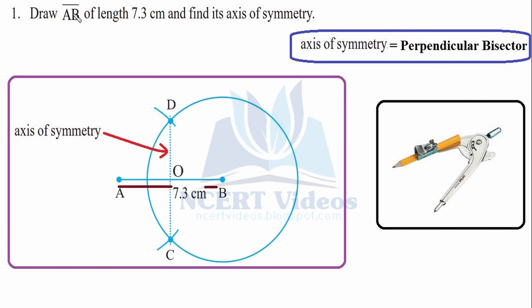Question 1: Draw line segment AB of length 7.3 cm. This is your line segment of length 7.3 cm, with points A and B represented by dots because it is a line segment.